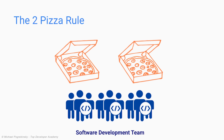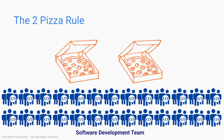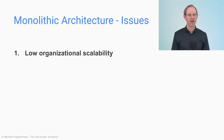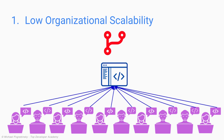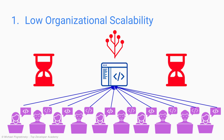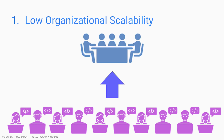However, as our company gets more successful and our development team keeps growing, we start running into more and more issues, far more serious than not being satisfied by two pizzas. The first issue is low organizational scalability. With too many engineers working on the same codebase, code merge conflicts become a serious problem. Essentially, everyone is stepping on each other's toes and completing even the most trivial feature becomes slower and harder. To deal with those issues, we need a lot more planning and coordination, which typically means more meetings. And the more people we have in those meetings, the longer and less productive they become.